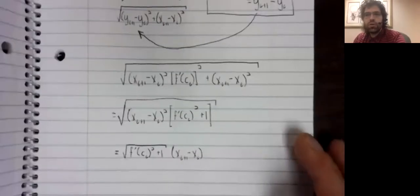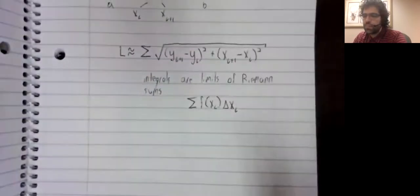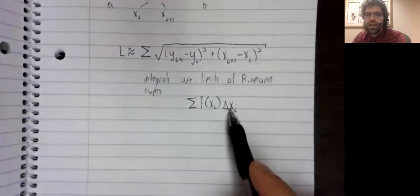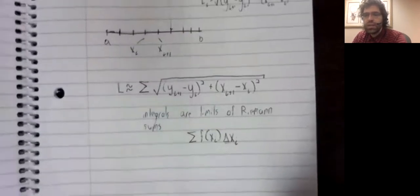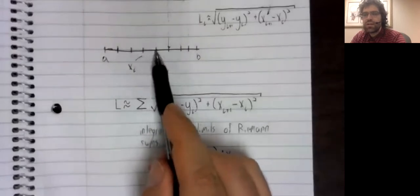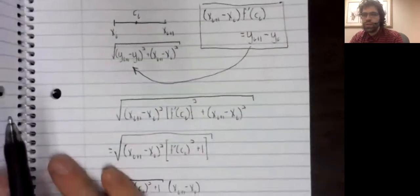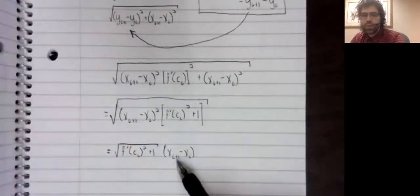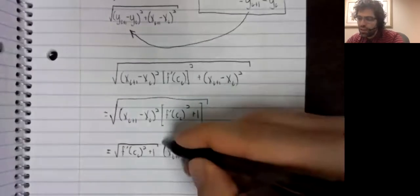Now, you know that Riemann sum we wanted? This delta x sub i that appears in a Riemann sum is precisely the length of the ith sub-interval. In other words, it's precisely this.